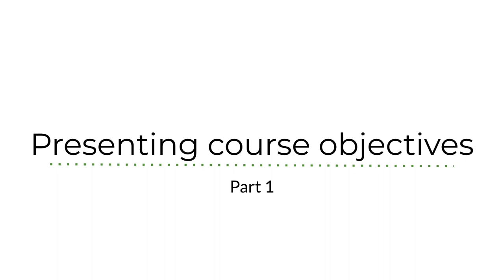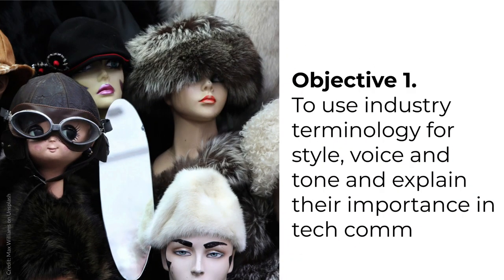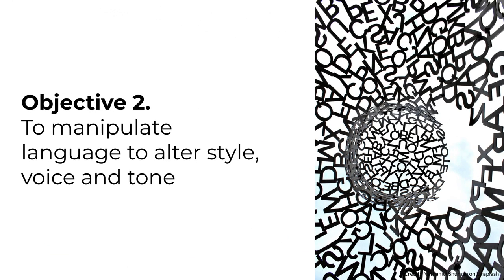Let's start with the goals of the course. The first objective is for you to use industry terminology for style, voice, and tone and be able to explain their importance in techcom. This is where we'll start the course and it's the focus of most of the activities during modules one and two. The second objective is for you to manipulate language to alter style, voice, and tone. You'll begin that work in module three and will continue flexing your writing muscles throughout the remainder of the course.